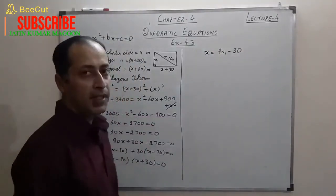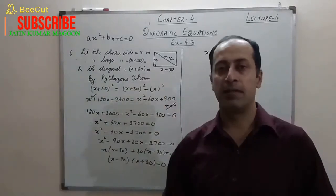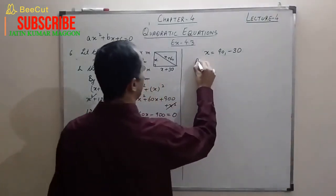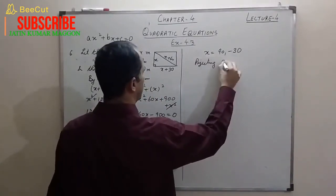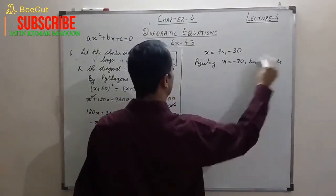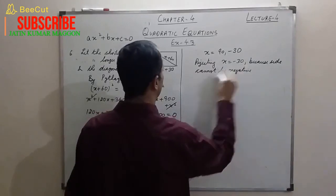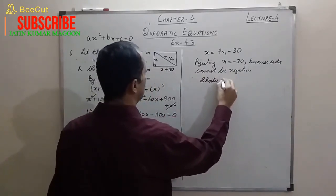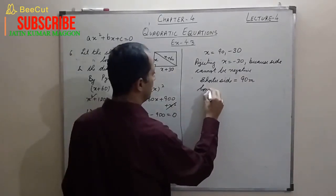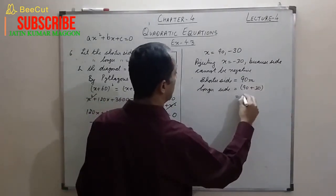We reject x = −30 because the side of any polygon cannot be negative. Therefore the shorter side = 90 meters, and the longer side = 90 + 30 = 120 meters.